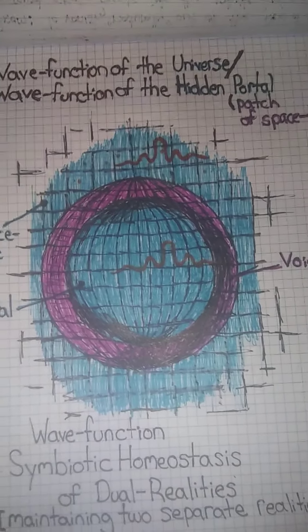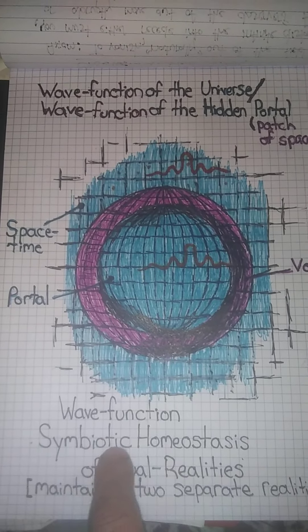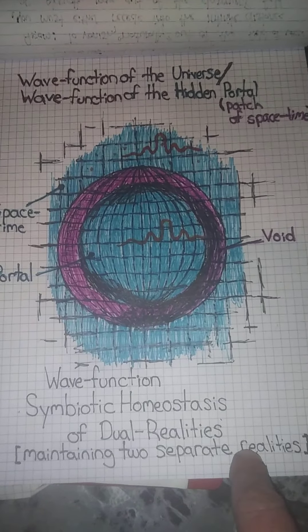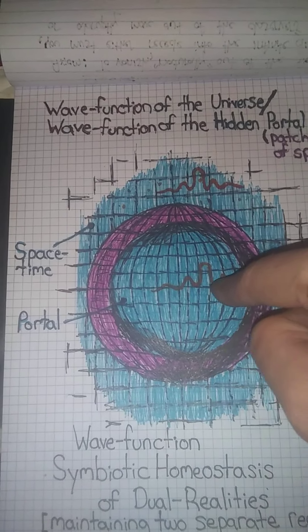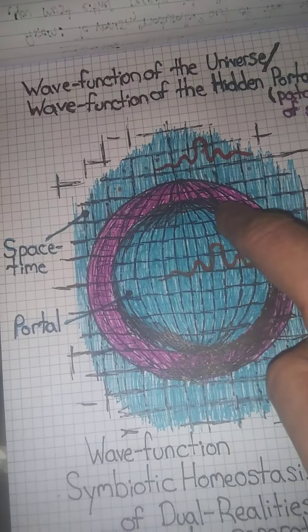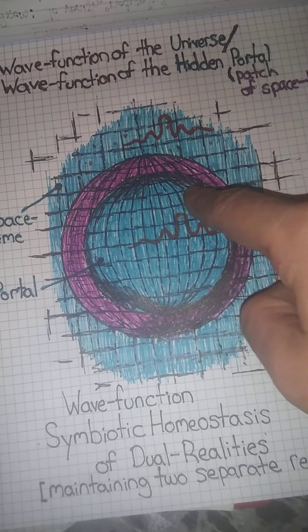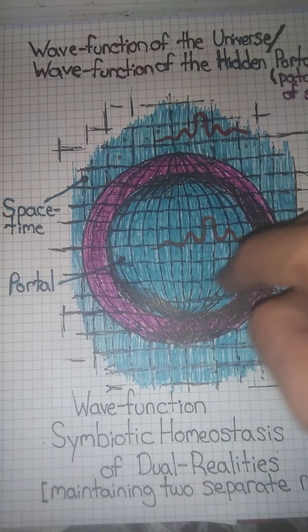The idea for a portal, a real portal, is that there must be some sort of a wave function symbiotic homeostasis of dual realities maintaining two separate realities. The wave function of the universe outside and the wave function of the portal inside, the inner hidden reality. This wave function must exist within some boundary. I call it a void between our reality and the reality depicted inside this portal, which I drew as a sphere.